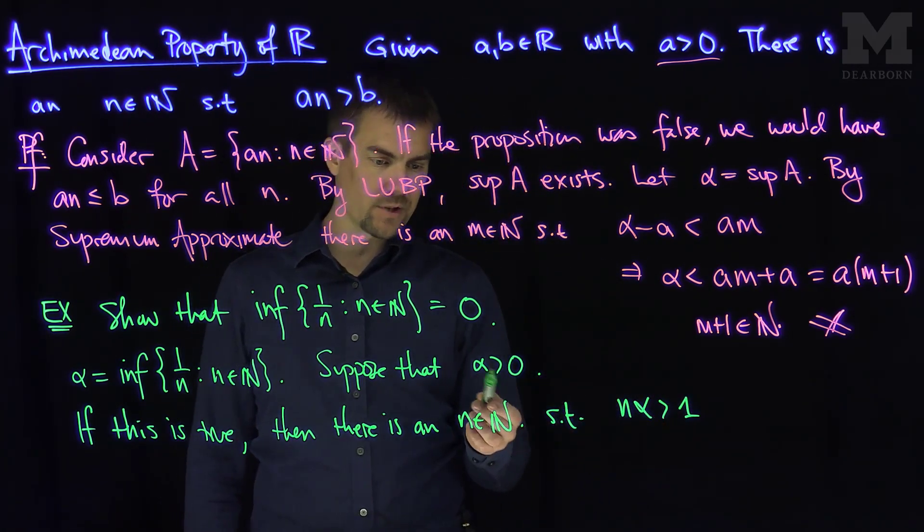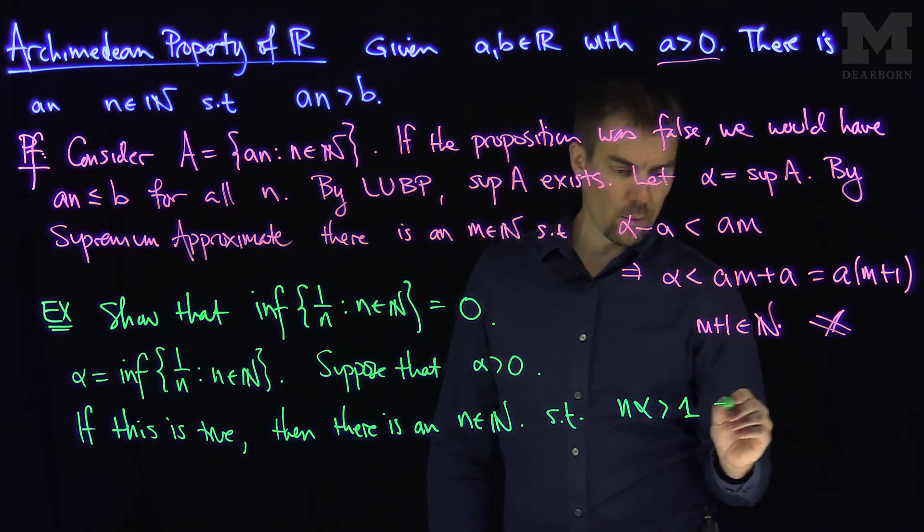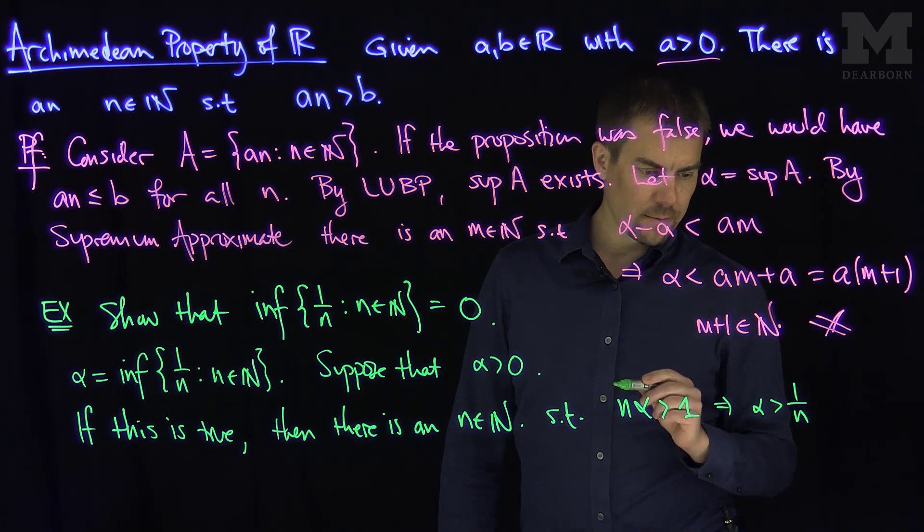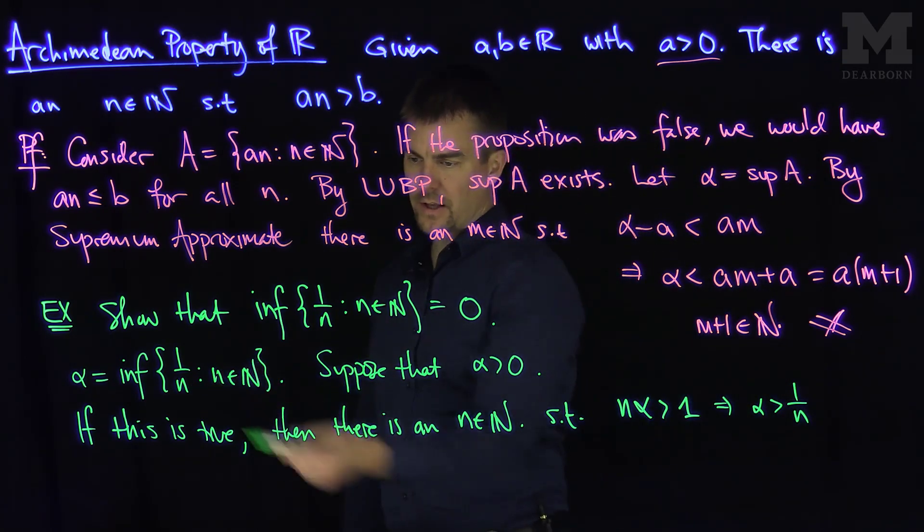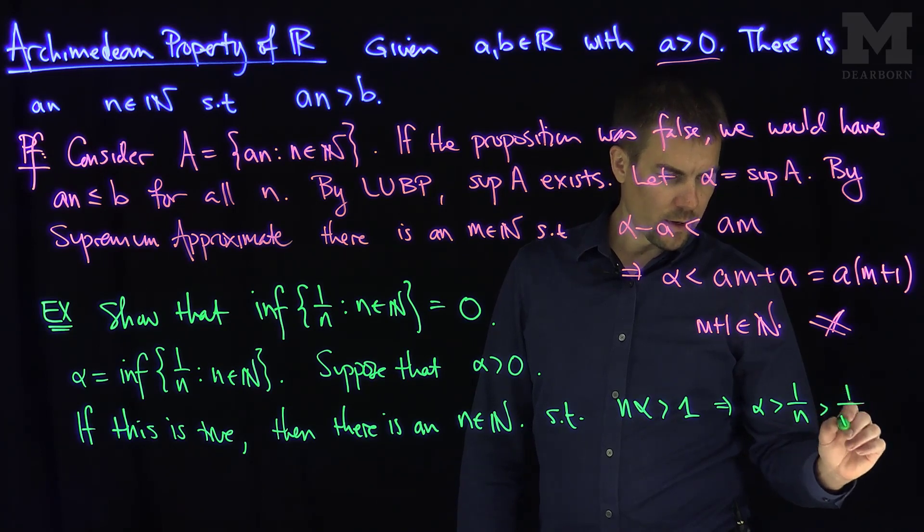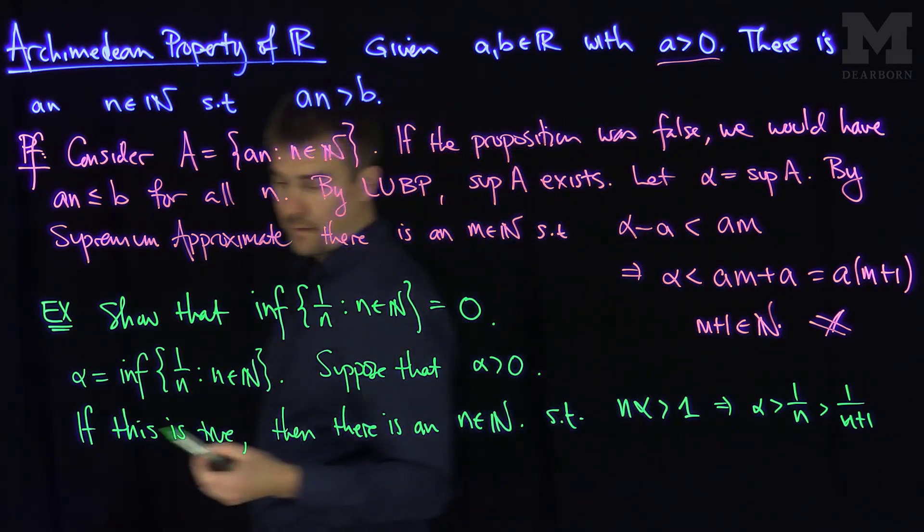So here I'm using the Archimedean principle with my a being alpha and my b being one, and that would say that alpha is bigger than one over n. But one over n is clearly in this set. This is bigger than one over n plus one, for example,